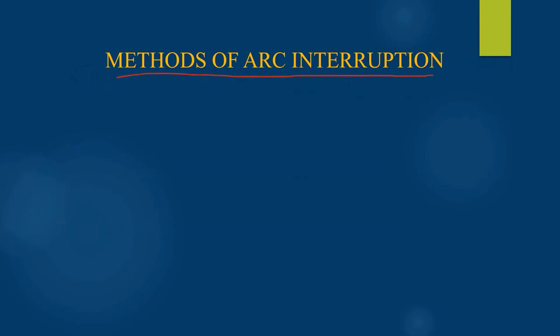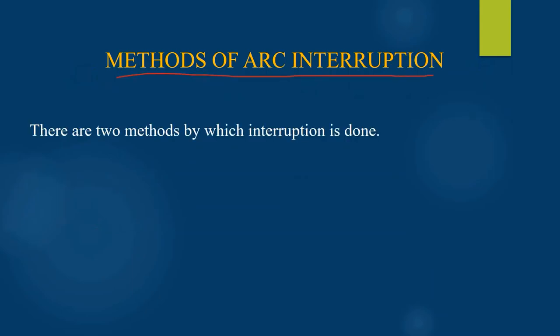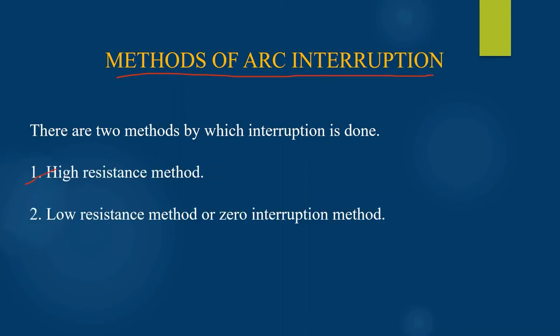Methods of arc interruption. There are two methods by which the arc can be interrupted: first, high resistance method; second, low resistance method. This low resistance method is also known as zero current interruption method. In the high resistance method, the value of arc resistance is increased with time so that the current reaches a value that is not sufficient enough to maintain the arc.